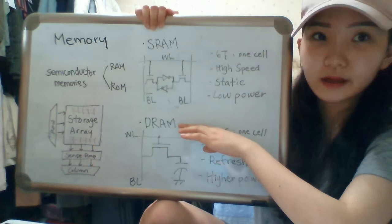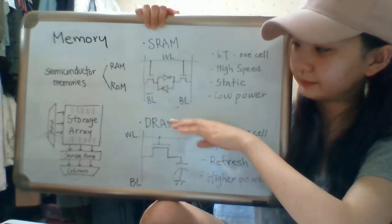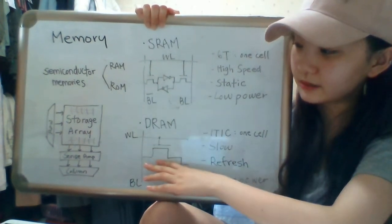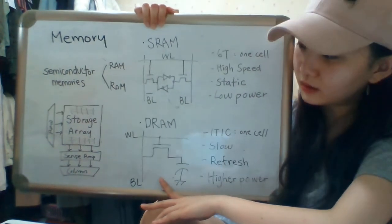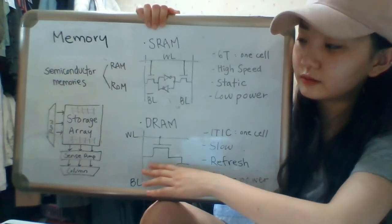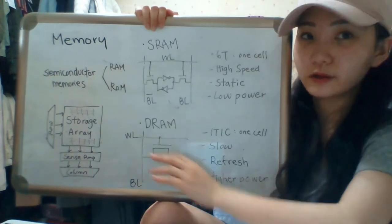DRAM is dynamic random access memory. It has 1 transistor and 1 capacitor as one cell. When we switch on the transistor, the capacitor gets charged.